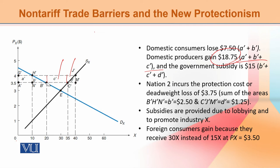تیسرا major player جو state ہے، اس کی بات کریں تو state جو subsidy دے رہا ہے وہ ہے B-bar, C-bar, and D-bar — that is $15. اگر آپ C-bar نکالنا چاہیں: A-bar + B-bar = 7.50 نکالا ہوا ہے تو C-bar کا area that would be 18.75.